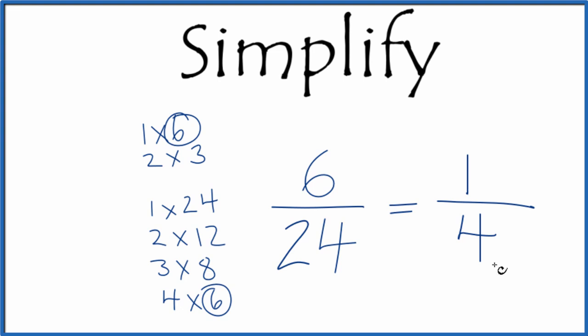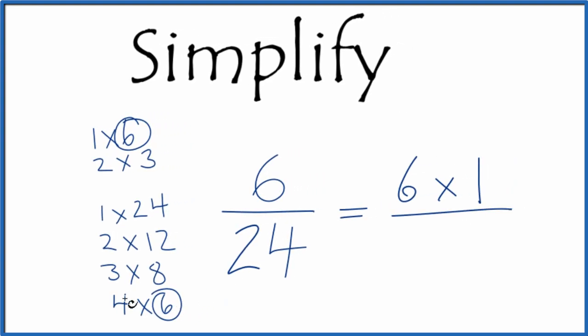There's one more way we could look at this. We could say 6 times 1 equals 6, and 6 times 4 equals 24. Because we have 6 on the top and the bottom, we can cross that out, and we get the same thing we got before, 1/4.